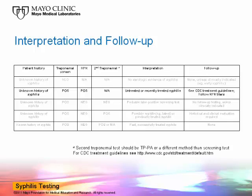In the second scenario, a patient presents with an unknown history of syphilis, and the results of both the screening treponemal test and the RPR are positive. In this situation, a second treponemal test is not required, and we would interpret these results as either untreated syphilis or recently treated syphilis. For follow-up, I would refer you to the CDC website for up-to-date treatment guidelines and recommendations on further testing, which generally includes following RPR titers to demonstrate a response to therapy.